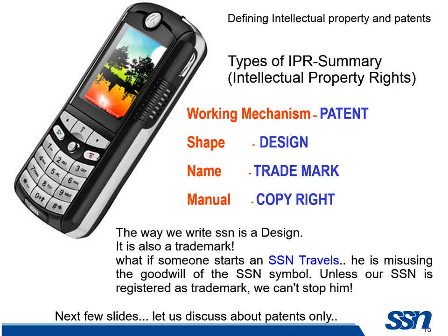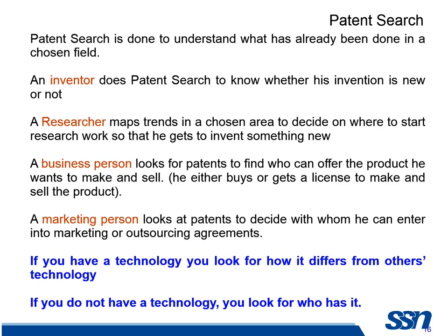In order to do a patent, we have something called a patent search. This is done to understand what is already available as patents. The terms we use are inventor and assignee. An inventor is a person who discovers or develops a product; an assignee is somebody to whom the right of the patent is given. An inventor does a patent search to understand whether his invention is really new. If I'm a researcher, I'll try to see what products are going on today and map the trend. If I'm a business person, I can look for technologies to buy or license. If I'm a marketing person, I can look at patents for outsourcing agreements. Just like a literature search, patent search is a very critical thing.